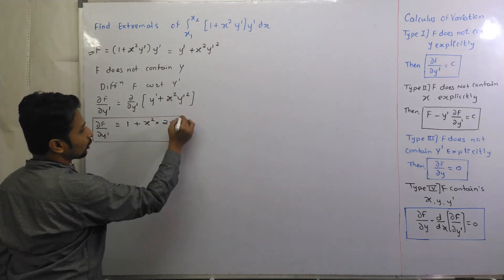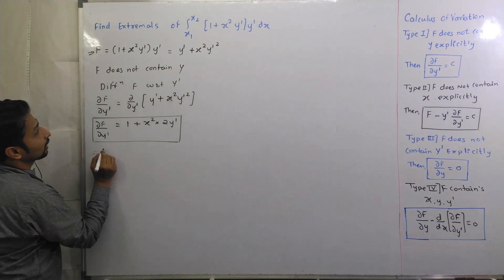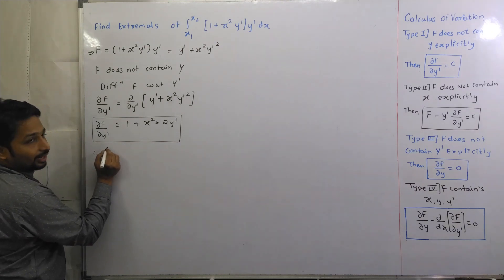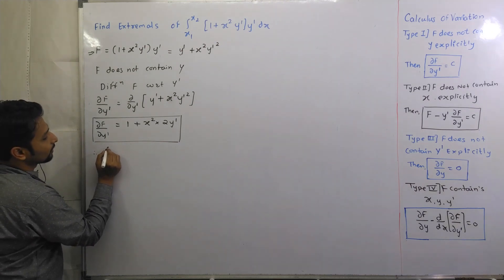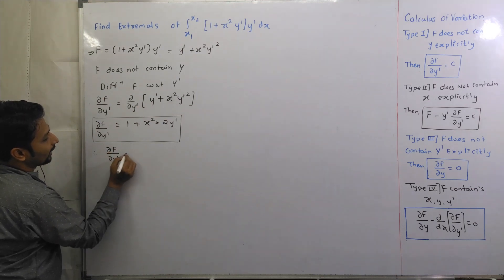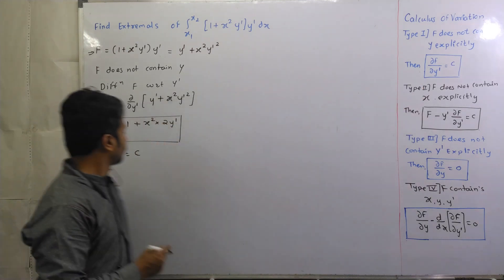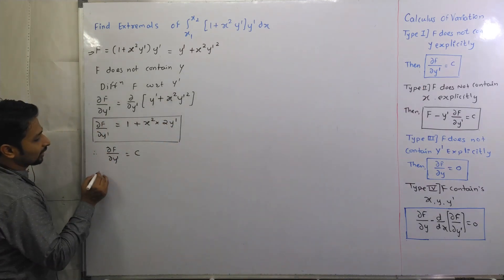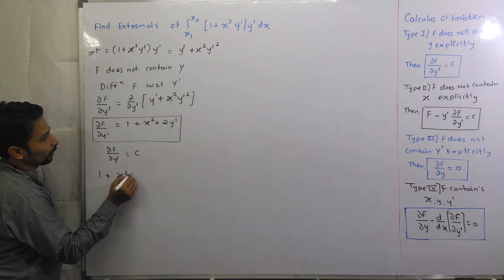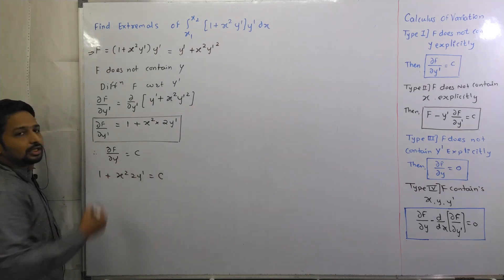And here answer you have got utilized. So if f does not contain y, then y actually say that you have got do f by do y dash is equal to c. So if you have got do f by do y dash, then you have got 1 plus 2 x square y dash is equal to c.